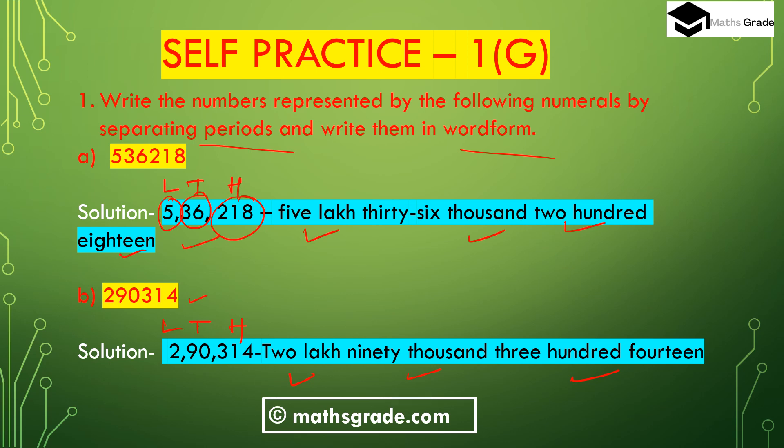In the Indian system of numeration, we place three digits in the hundreds place, two digits after comma in the thousands place, and two digits after comma in the lakh place. In the international system of numeration, we place three digits in the hundreds place, three digits in the thousands place after comma, and three digits in the million place after comma.